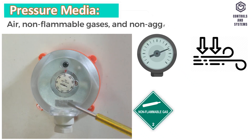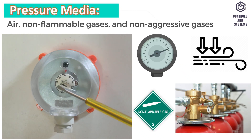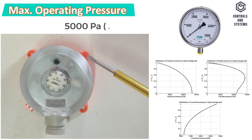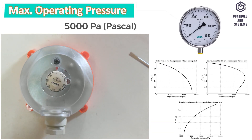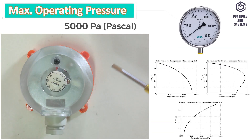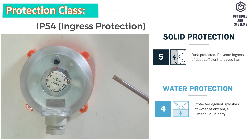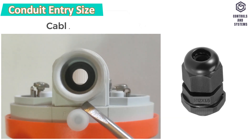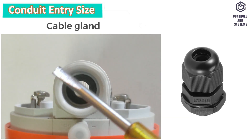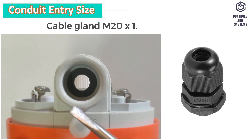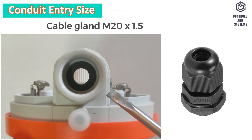Technical Specifications: The pressure media is air, non-flammable gases, and non-aggressive gases. Maximum operating pressure is 5000 Pascals. Degree of protection is IP54. Conduit entry size is M20 x 1.5 mm.